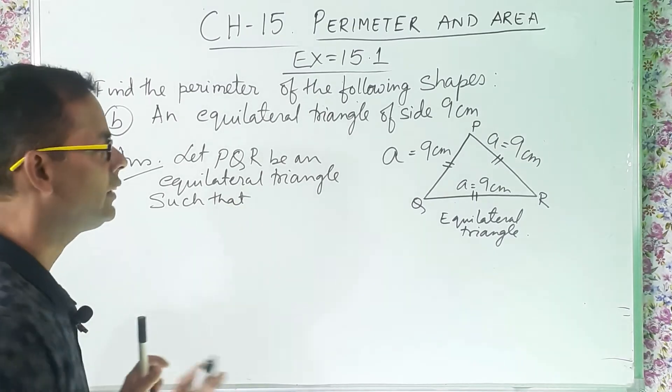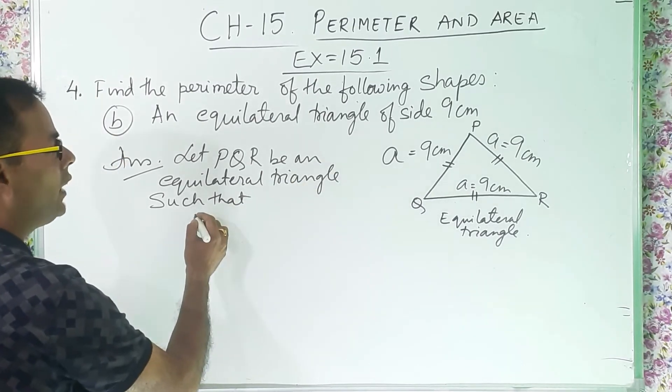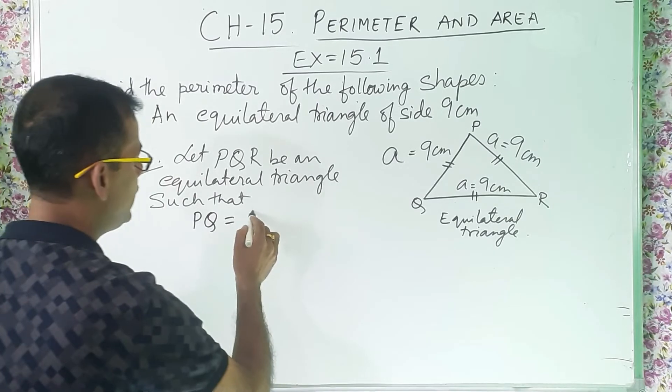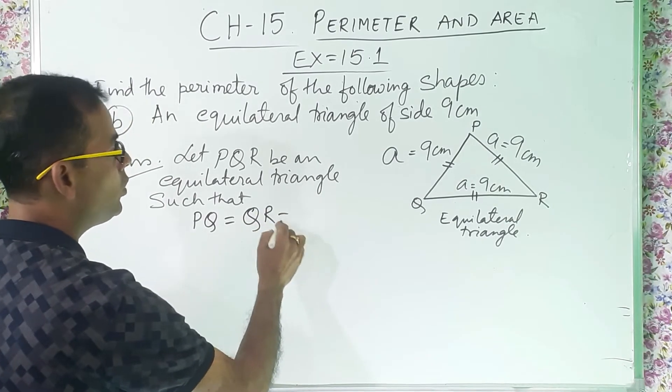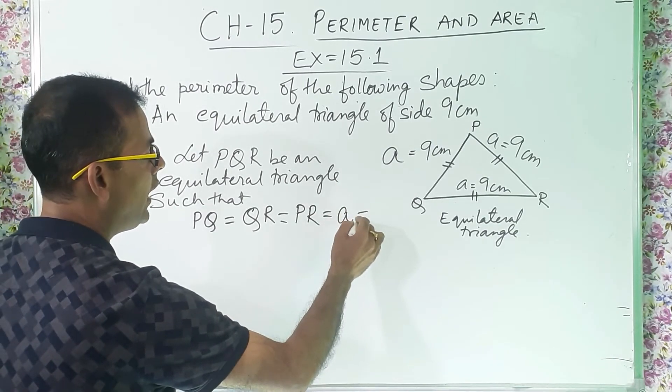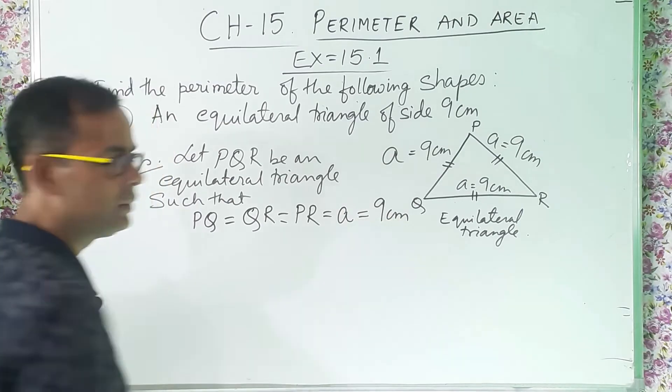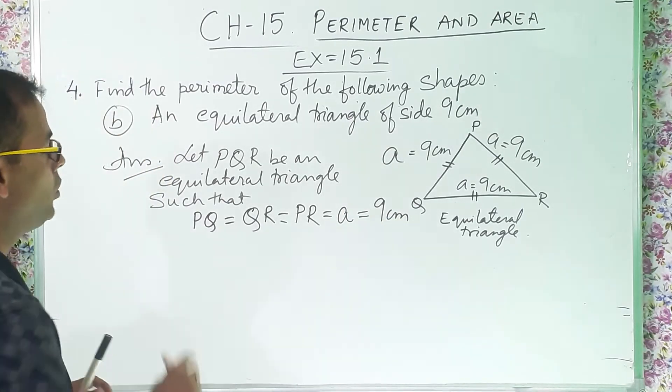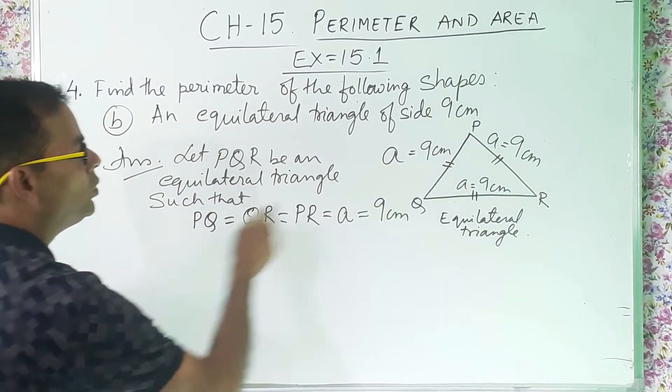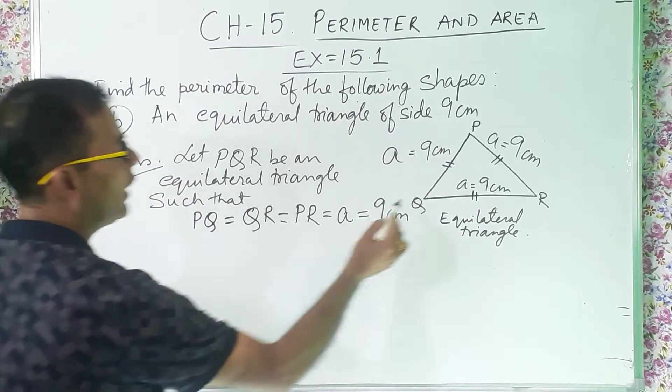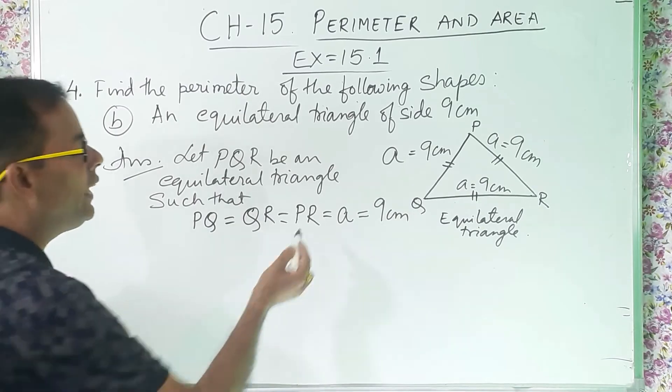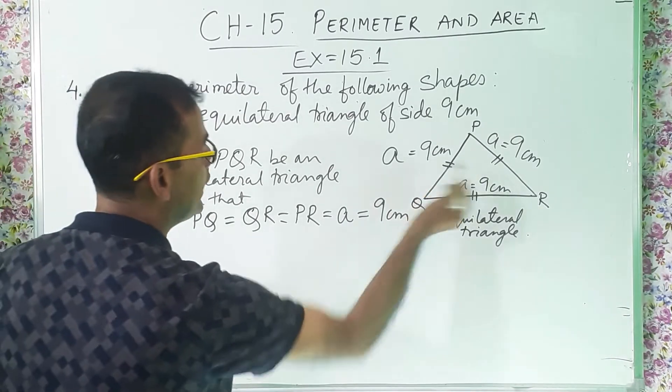Same way, such that, what are the sides? One side is PQ equal to, another side is what? QR equal to, another side is what? PR, and all the sides are equal to a and that is how much? 9 centimeter. Why I wrote this side equal to this side equal to this side? So that is why I wrote PQ equal to QR equal to PR and that is only small a and how much it is? 9 centimeter.